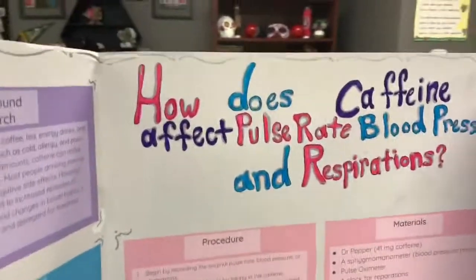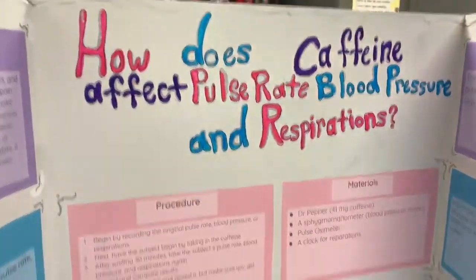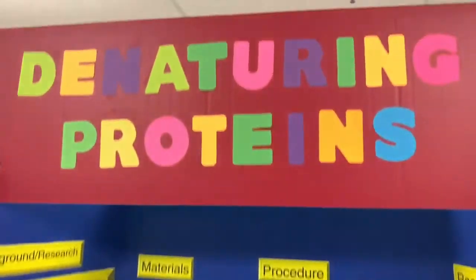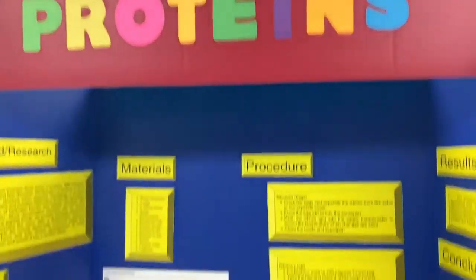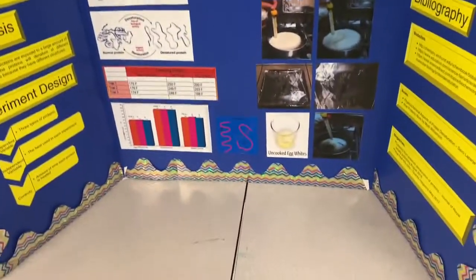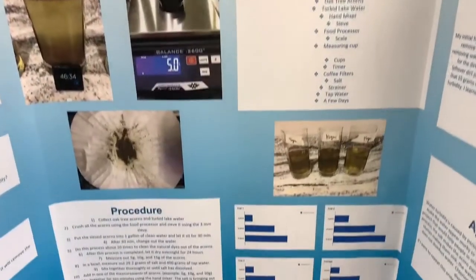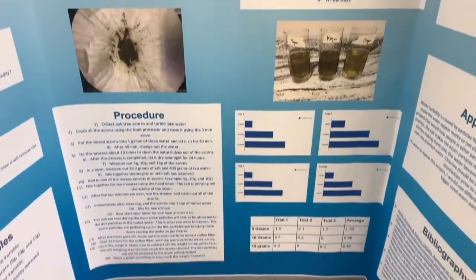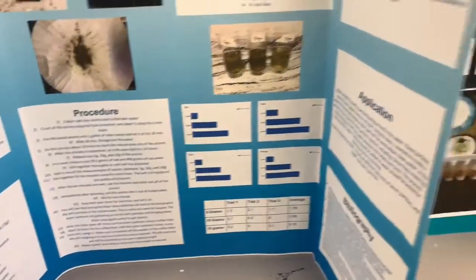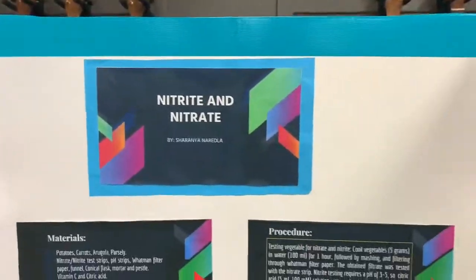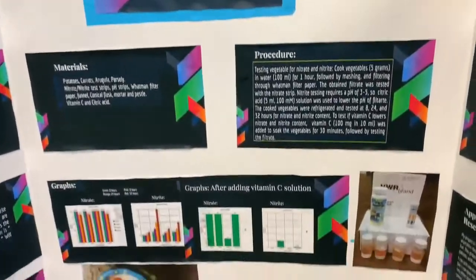Here we have 'Reaction Time' with pictures. Up next is 'How Does Caffeine Affect Pulse Rate, Blood Pressure, and Respirations?' Then 'Denaturing Protein' and 'Removal of Water Turbidity Using Natural Coagulants.' Here we have 'Nitrate and Nitrite.'